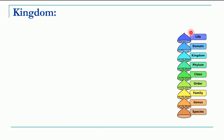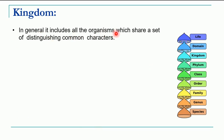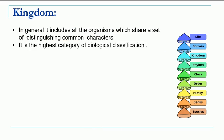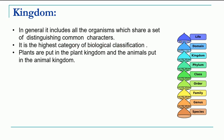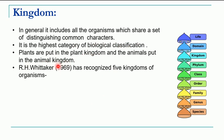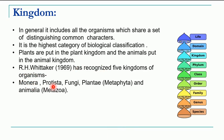Now we move on to the topmost category, that is kingdom. It includes all organisms which share some common characters and is the highest category of biological classification. Plants are put in kingdom Plantae and animals are put into kingdom Animalia. We have seen in the Whittaker five-kingdom classification system the five kingdoms: Monera, Protista, Fungi, Plantae, and Animalia.